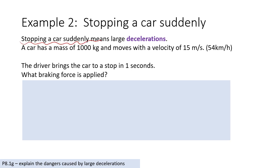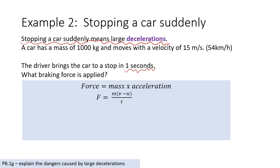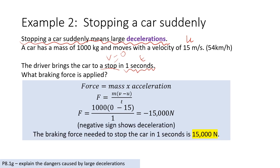Stopping a car suddenly means large deceleration. Using the same method as before — mass times acceleration, where acceleration is V minus U over T — our U is 15 m/s, V is zero, and time is one second. The braking force needed to stop the car in one second is 15,000 newtons.